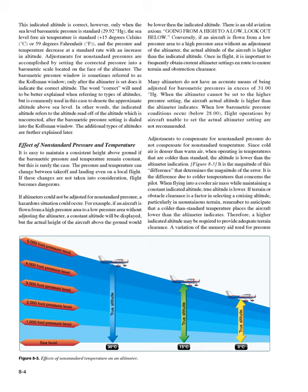Airspeed Indicator (ASI). The ASI is a sensitive differential pressure gauge that measures and promptly indicates the difference between pitot (impact/dynamic) pressure and static pressure. These two pressures are equal when the aircraft is parked on the ground in calm air. When the aircraft moves through the air, the pressure on the pitot line becomes greater than the pressure in the static lines. This difference in pressure is registered by the airspeed pointer on the face of the instrument, calibrated in miles per hour, knots, or both. Figure 8-7: The ASI is the one instrument that utilizes both the pitot and static systems. Static pressure is introduced into the airspeed case, while pitot (dynamic) pressure is introduced into the diaphragm. The dynamic pressure expands or contracts the diaphragm, driving the mechanical linkage and the airspeed needle.